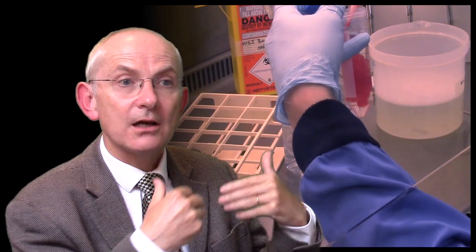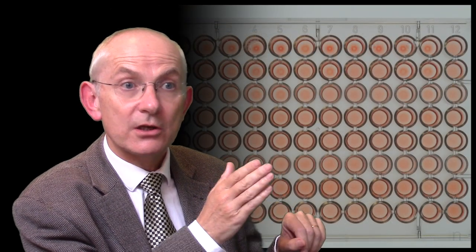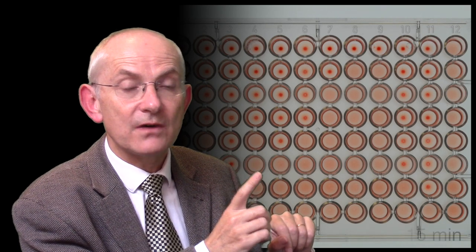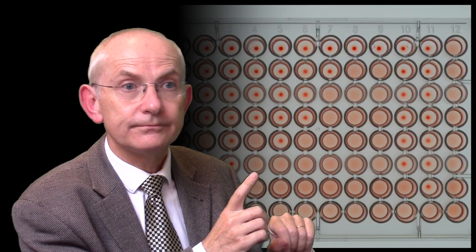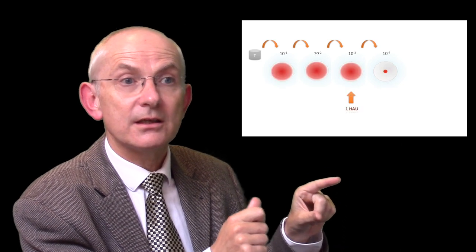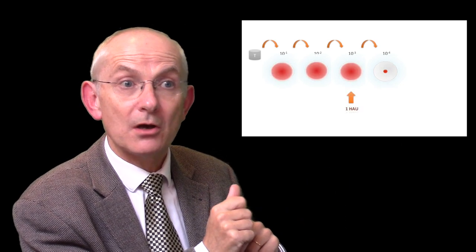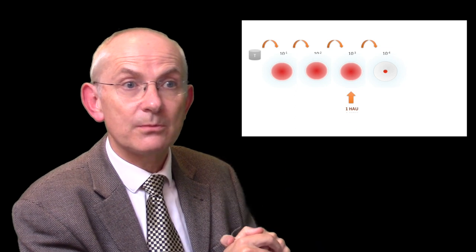If we now add a red blood cell suspension to those wells and allow the red cells to settle, the last well in the dilution series showing a shield is said to have one hemagglutinating unit of virus in that well. By taking into consideration the volume we've added to the well and the dilution of the virus added to that well, we can calculate a titer in terms of hemagglutinating units per mil of the original virus preparation.